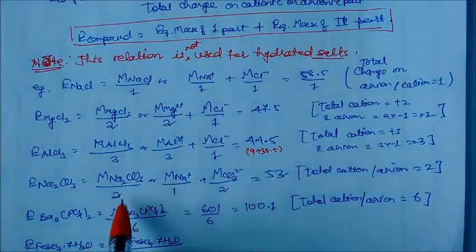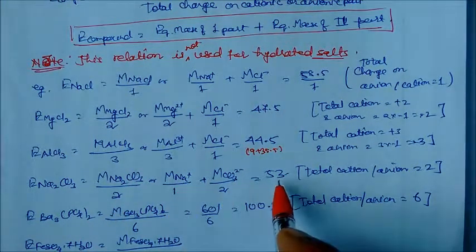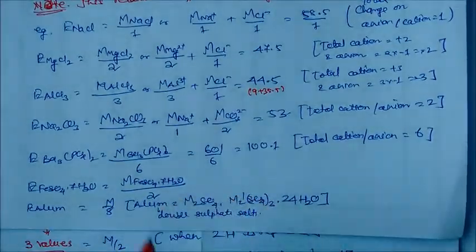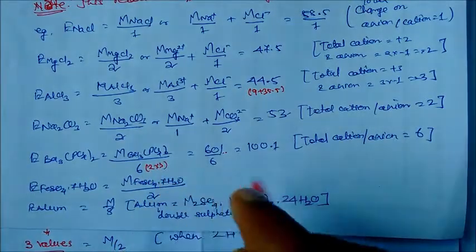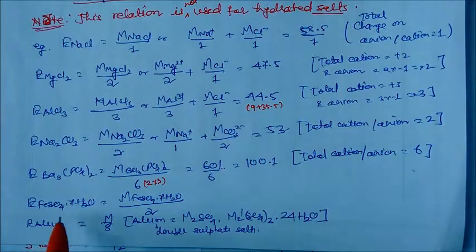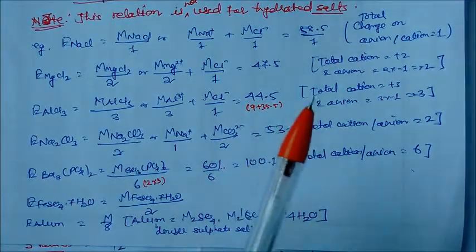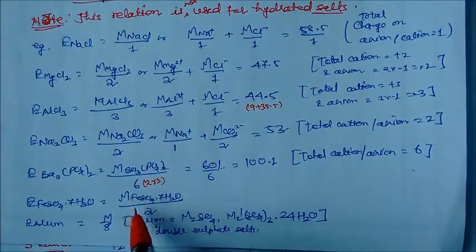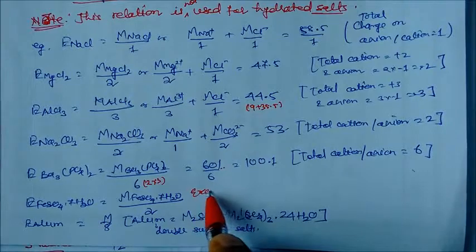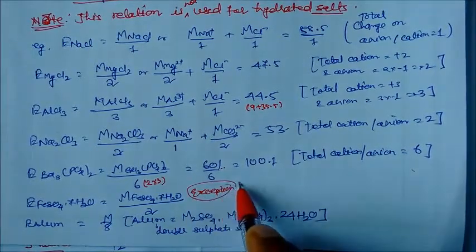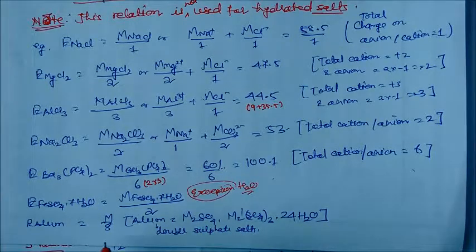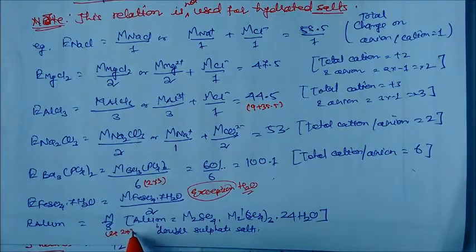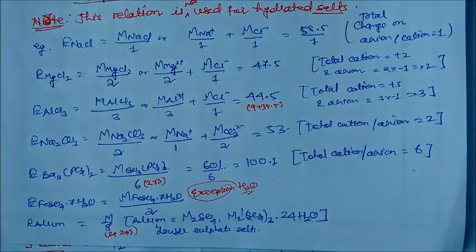For barium phosphate: total molecular mass is 601, charge is 3×2 = 6, so 601/6 = 100.1 grams. For iron sulfate: divide molecular mass by 2. For hydrated salts, we do not count the water of crystallization — we take the full molecular mass including water, but use only the charge of the ionic part (not water). For example, BaSO4·2H2O: take full mass but divide by charge of barium only, giving answer 122. This exception applies to all hydrated salts.